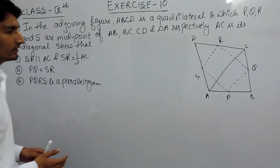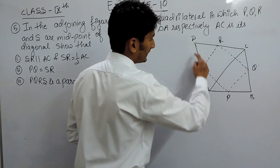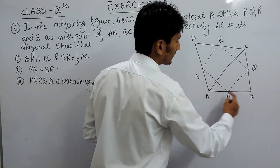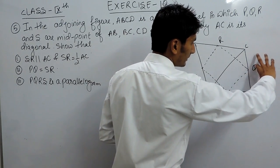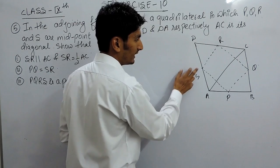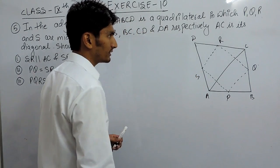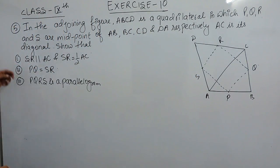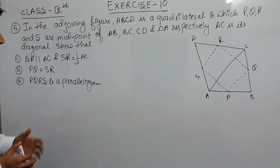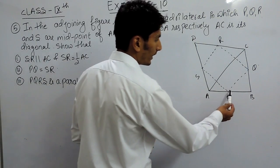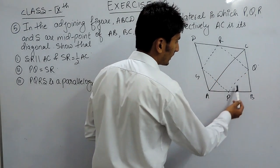It is given that ABCD is a quadrilateral (4-sided figure) and P is the midpoint of AB, Q is the midpoint of BC, R is the midpoint of DC, and S is the midpoint of DA. We have to prove three parts: first, SR is parallel to AC and SR is half of AC; second, PQ is equal to SR; and third, PQRS is a parallelogram.